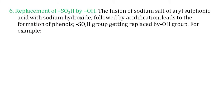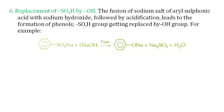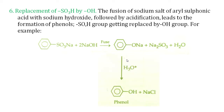Next is replacement of SO3H by OH. We add NaOH to the sodium salt of benzene sulfonic acid, and sodium phenoxide is formed along with Na2SO3. If sodium phenoxide is then acidified, phenol is obtained. This reaction is a very good method for the preparation of phenols.